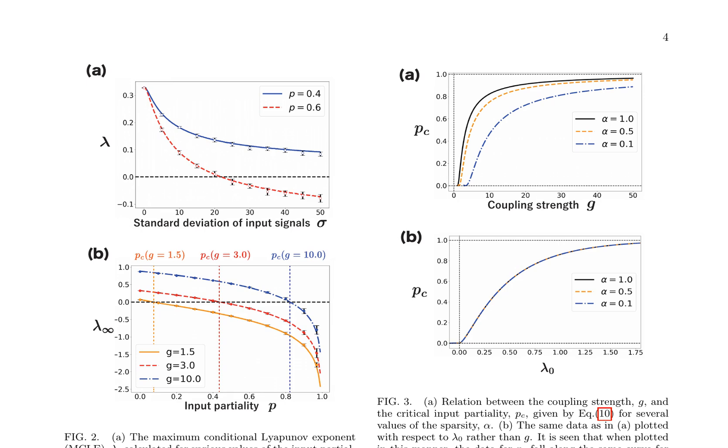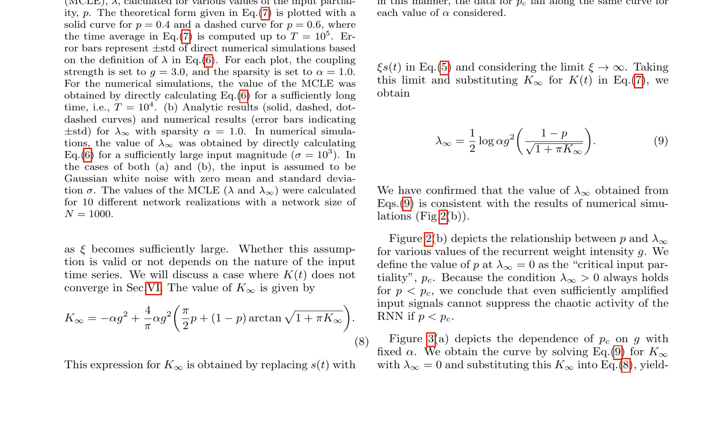The maximum conditional Lyapunov exponent, MCLE, is calculated for various values of input partiality p, revealing theoretical and numerical results. The critical input partiality p_c is obtained by solving equation 9 for k_∞ with λ_∞ = 0 and substituting this k_∞ into equation 8. This value depends on the coupling strength g and the sparsity α, as shown in figure 3a. The critical input partiality is crucial in determining the onset of chaotic activity in the RNN.